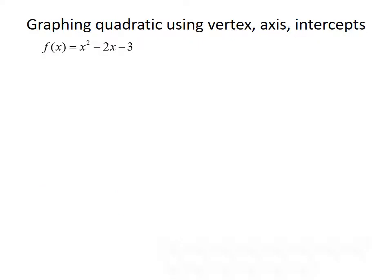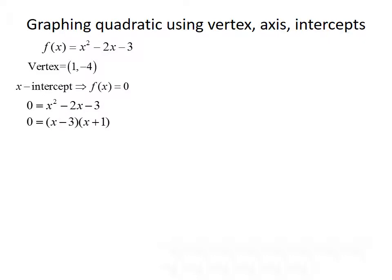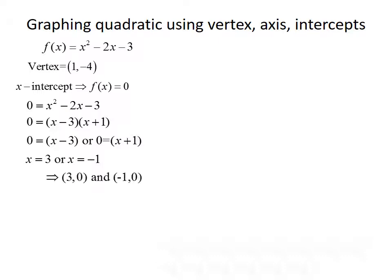Another way to graph a quadratic function is to use its vertex, axis of symmetry, and intercepts. Continuing with f of x equals x squared minus 2x minus 3, the vertex is 1, negative 4. To find the x intercepts, set f of x equal to 0: 0 equals x squared minus 2x minus 3, which factors to 0 equals x minus 3 times x plus 1. Using the zero product property, x equals 3 or x equals negative 1, giving x intercepts of 3, 0 and negative 1, 0.